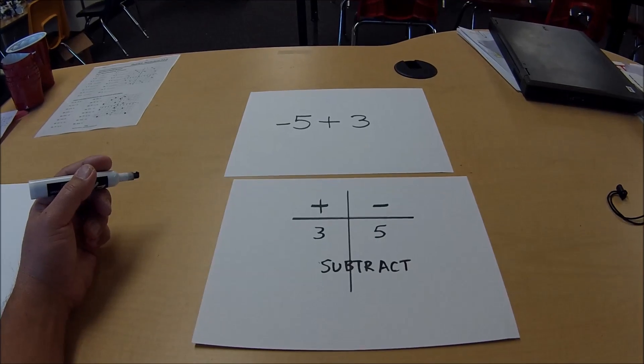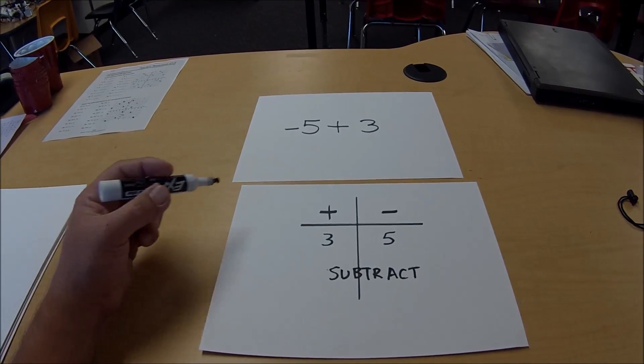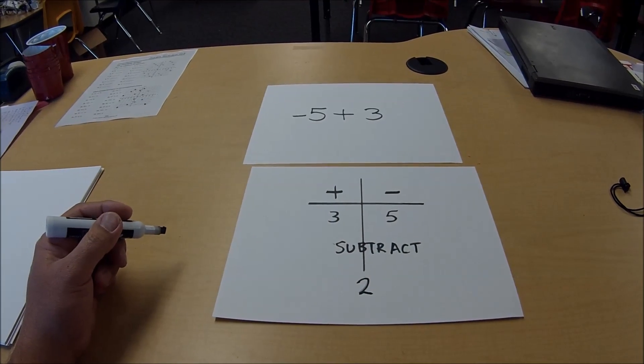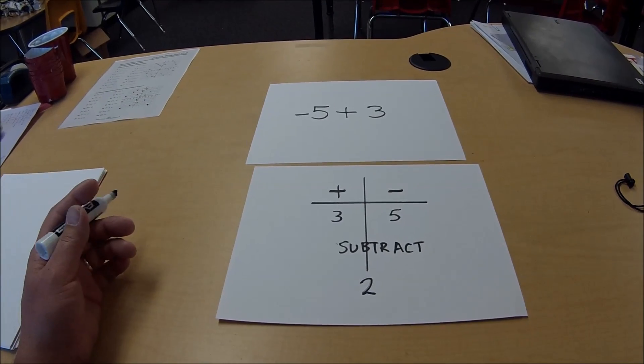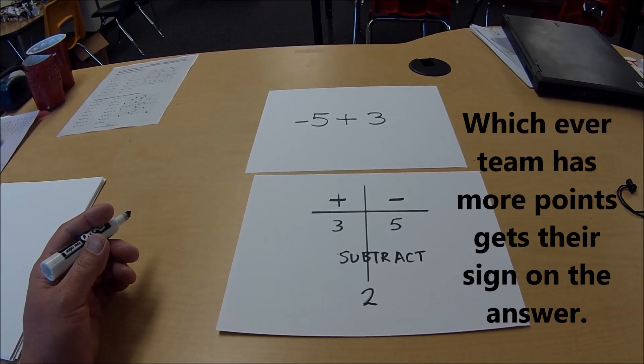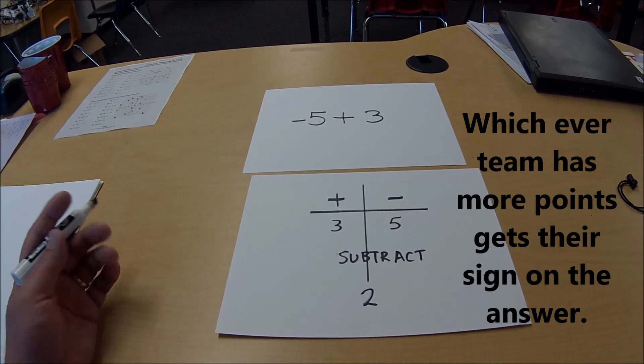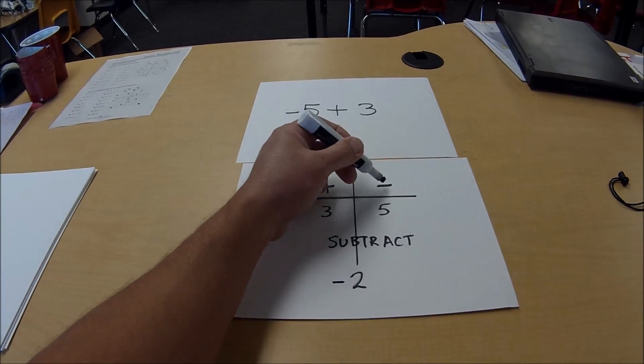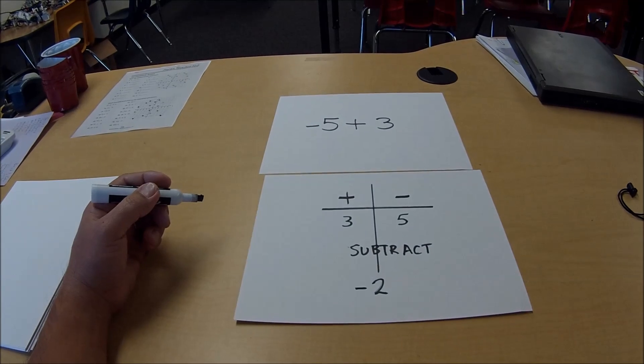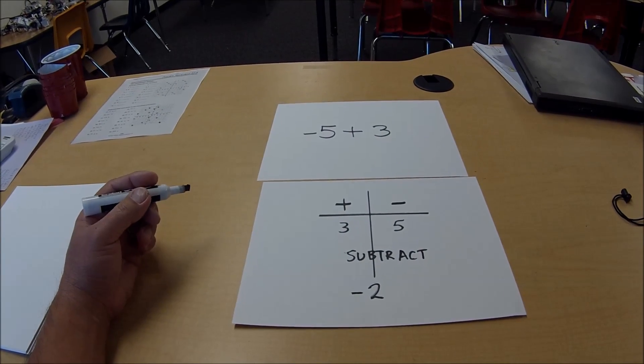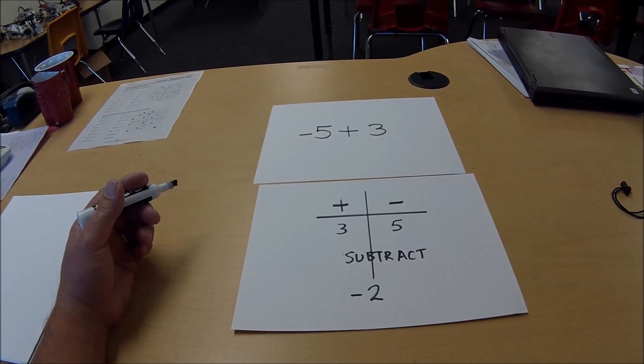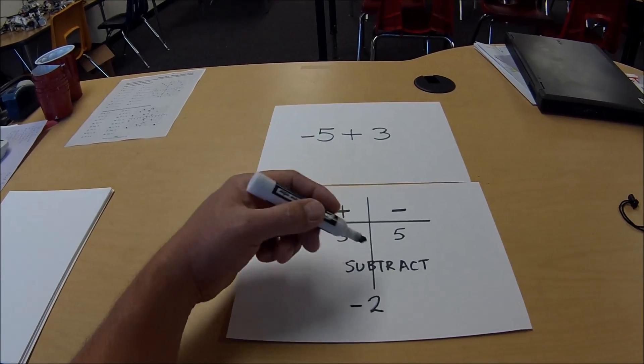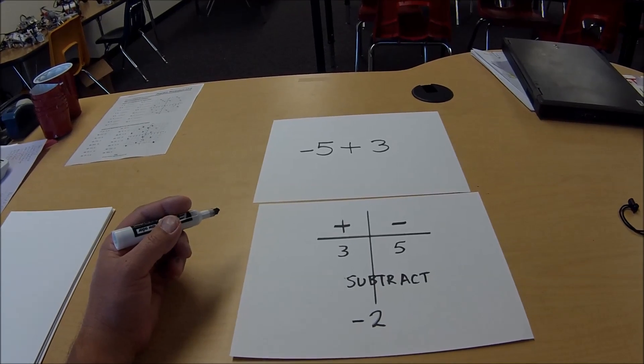Different teams subtract. So in this case here they would go 5 minus 3 is 2. And then I tell them another rule, the last rule is whoever has the most points wins the game. So 5 beats 3, and it's a negative, so the answer would be a negative 2. So that's just an easy way to add integers and to use a t-chart to get the answer relatively easy.